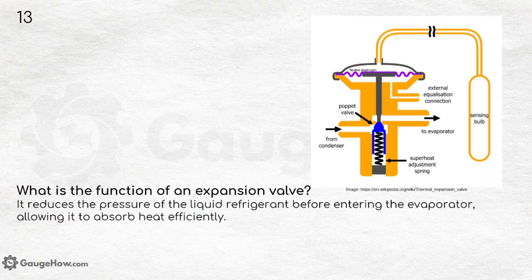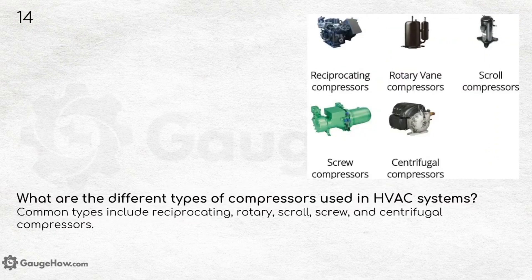What is the function of an expansion valve? It reduces the pressure of the liquid refrigerant before entering the evaporator, allowing it to absorb heat efficiently. What are the different types of compressors used in HVAC systems? Common types include reciprocating, rotary, scroll, screw and centrifugal compressors.